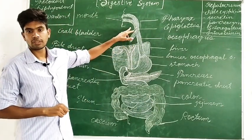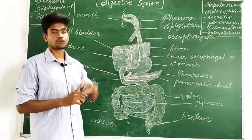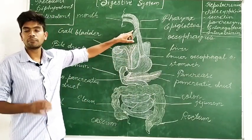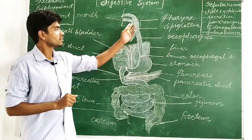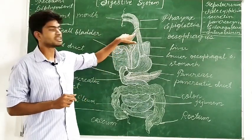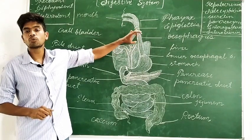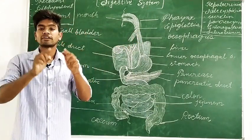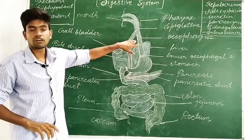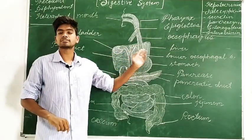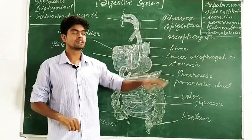At the pharynx, the alimentary canal gets divided into two parts: the trachea and the esophagus. Here, a structure called the epiglottis is found — it is a cartilaginous structure. Whenever we eat something, it covers the trachea and pushes the food into the esophagus. The movement of the bolus into the esophagus occurs due to its wave-like contraction movement, called peristalsis. Because of peristalsis, the food travels down the esophagus and the lower esophageal sphincter relaxes, allowing the food to enter the stomach.